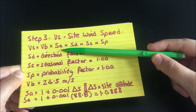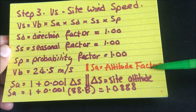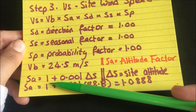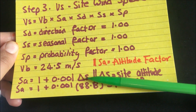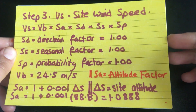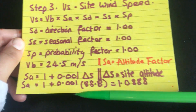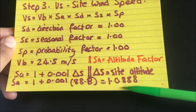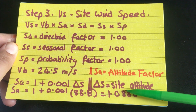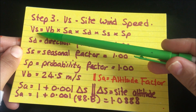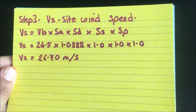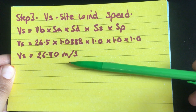Now the only thing left to determine is SA, the altitude factor. From BS6399 part 2, SA equals 1 plus 0.001 times delta S, where delta S is the site altitude. We know the altitude is 88.8 meters, so substituting that in gives SA equals 1.0888. Now I have all the parameters needed to work out the site wind speed VS, and putting them all into the formula gives VS equals 26.70 meters per second.